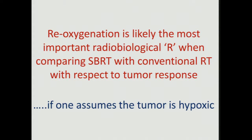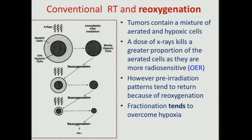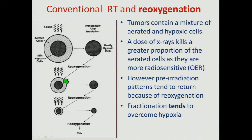Reoxygenation also depends on the fact that you have to have fractions for it to occur. If you've got a single SRS fraction, then you've got no interfraction interval. A classic cartoon — I think taken from one of Julie Dennecamp's reviews — shows the principle of reoxygenation: tumours contain a mixed population of aerated and hypoxic cells. An X-ray dose will kill cells preferentially based on their oxygen environment — radiation kills more oxygenated cells than hypoxic cells, which is why we define the OER parameter, the oxygen enhancement ratio. You kill off the aerated cells; in the interfraction interval, oxygen diffuses into the hypoxic regions, reoxygenates them, and you get a new population of aerated cells killed in the second dose, progressively addressing the hypoxic fraction.